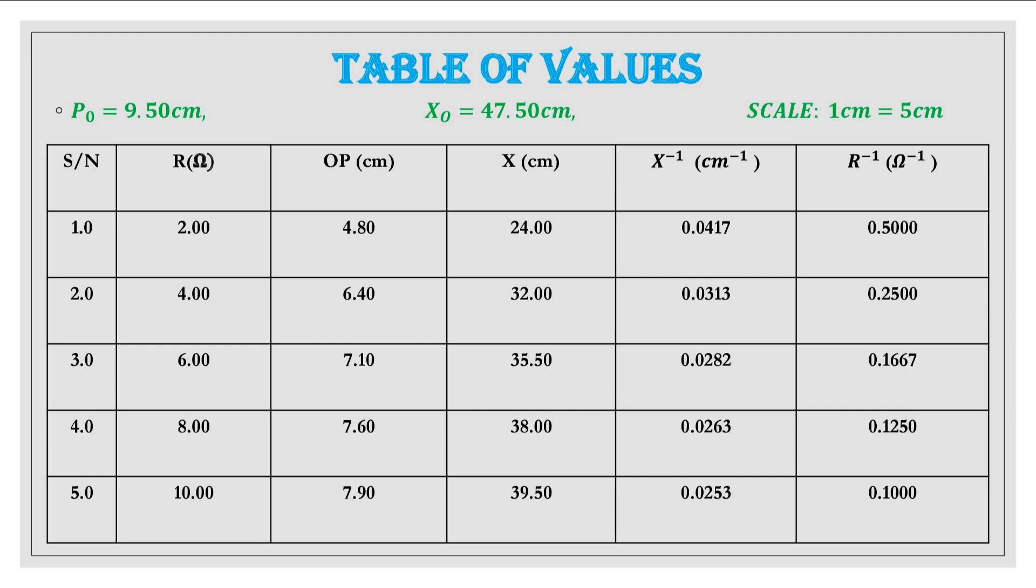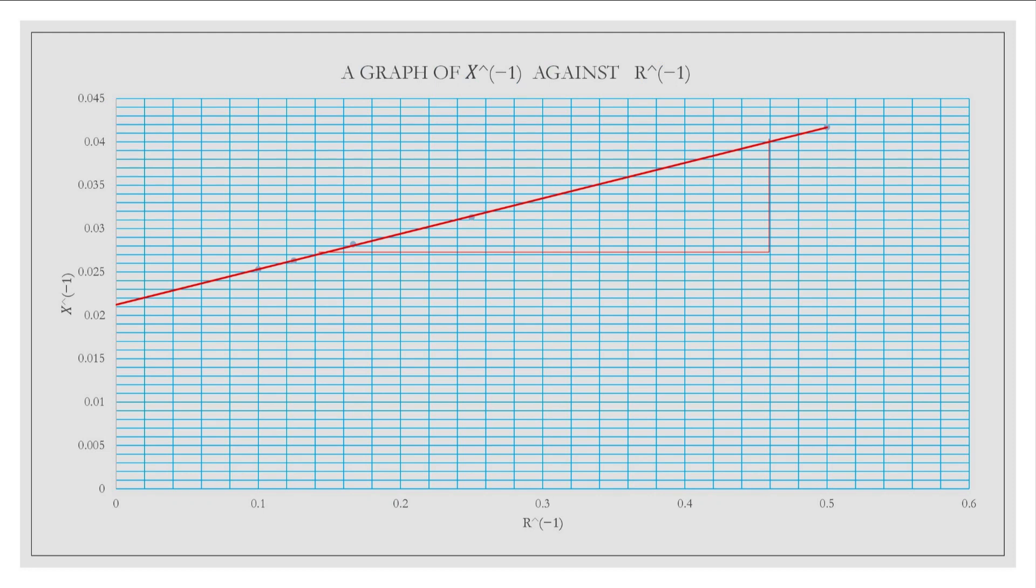So this is the composite table for this particular experiment as required. The next thing will now be to plot a graph of inverse of X on the vertical axis against inverse of R on the horizontal axis. Once that is done our graph will look like this. You can see that the graph is a positive straight line graph that cuts through the vertical axis. Almost all the points are touched by the slope line.